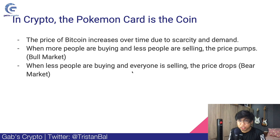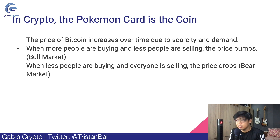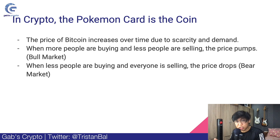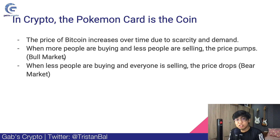The price of Bitcoin increases over time due to its scarcity and demand — that's the Charizard card concept. When more people are buying and fewer people are selling, the price pumps. Bitcoin's price rises because there are many buyers, it becomes in-demand and rare, supply decreases, and scarcity develops. That's why the price goes up. This is called a bull market — when the price rises because there's more demand and less supply.